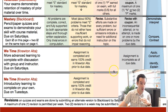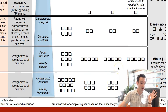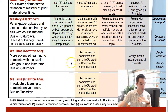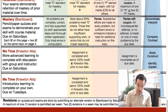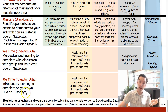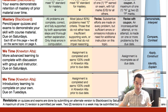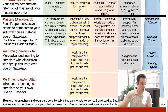Same thing with the we time assignments. The number of those you complete over the course of the semester — each one you complete, you check off a box on page three of your syllabus, from left to right in every row. Me times are generally due on Tuesdays and we times generally due on Saturdays, though you can get them done early if you like.